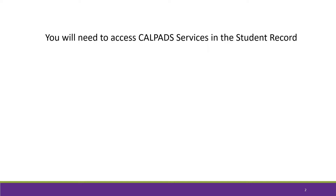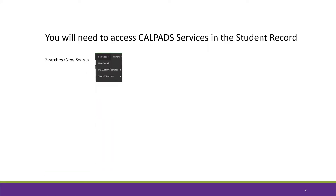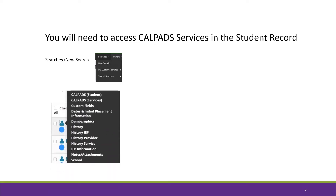There are several ways to access the student record. One way is to select Searches > New Search from the black navigation bar. Find the student where you want to add or remove a provider, click on the blue person next to their name, and then select CalPAD Services.